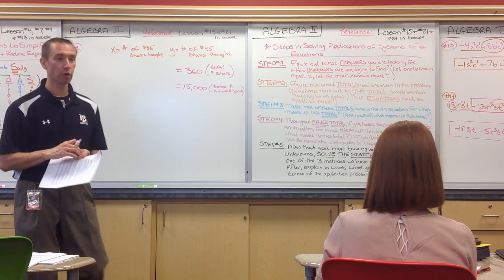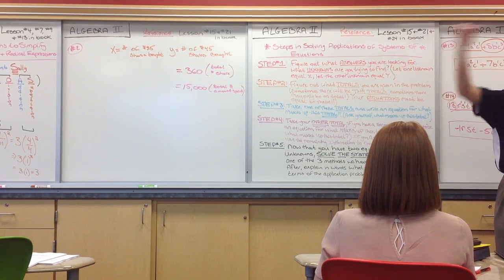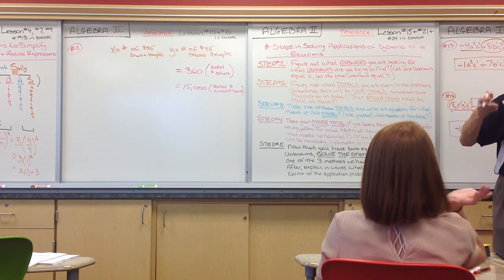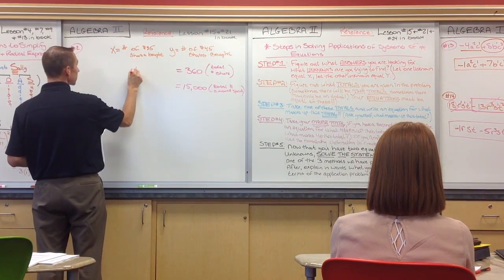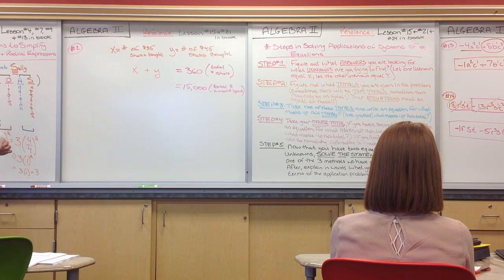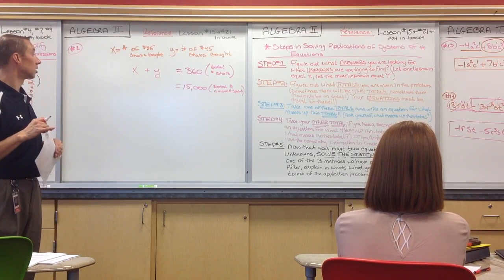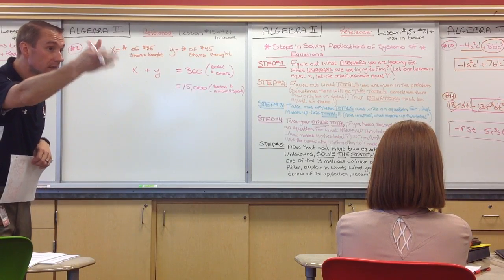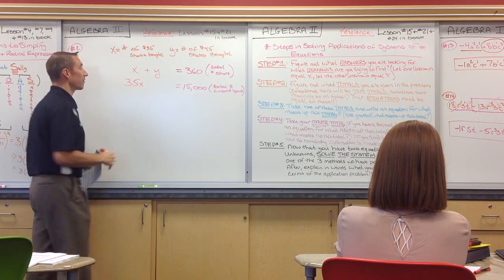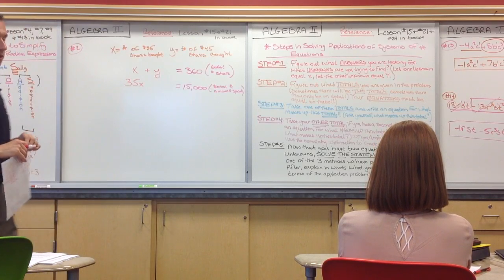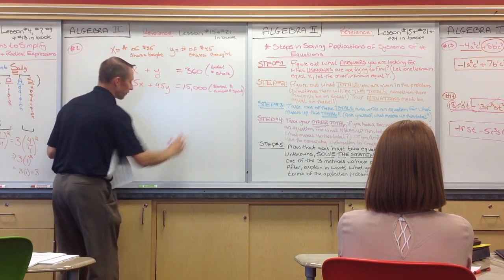Now, step three says take your totals and find out what makes up that total. So, how do we get 360 total shares? How many $35 shares do we buy? X amount. How many $45 shares do we buy? Y amount. So X plus Y is equal to 360. Now, what about $15,000? How do we arrive at that total? It costs $35 for every X that we purchase. And then what about my Y? Plus $45Y is equal to $15,000.